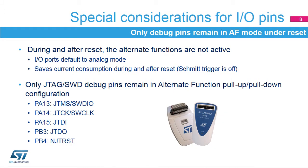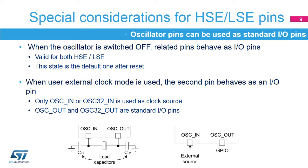During and after reset, the alternate functions are not active. Only debug pins can be used in alternate function mode. JTAG and serial wire debug pins remaining in alternate function configuration mode are listed in this slide. When the external oscillator is switched off, pins related to this oscillator can be used as standard I/O pins — this is the default state after a device reset. When an external clock source is used instead of a crystal oscillator, only the OSC IN pin is used for the clock and the OSC OUT pin can be used as a standard I/O pin.